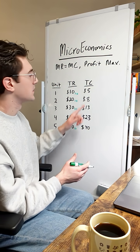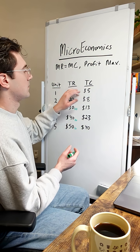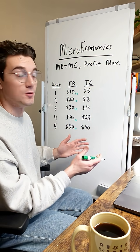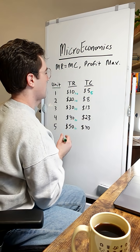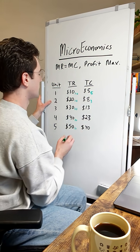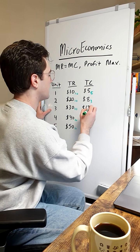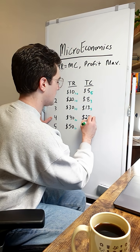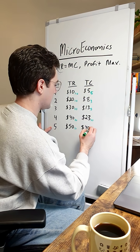Let's apply that same process for cost to calculate the marginal cost values. Theoretically at zero units, for the sake of this example, let's assume total cost was zero, so marginal cost was $5. For the second unit, 8 minus 5 — that's $3. Third unit, 13 minus 8 — that's $5. Fourth unit, 23 minus 13 — that's $10. Five units, 40 minus 23 — that is $17.